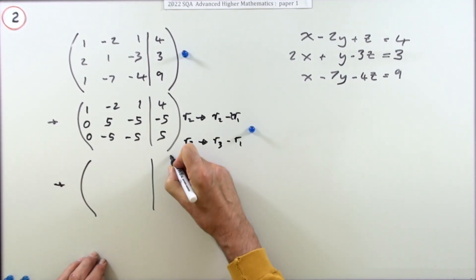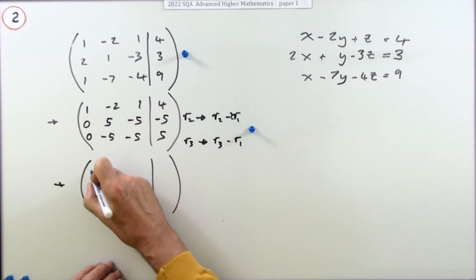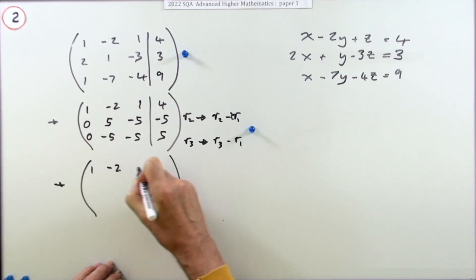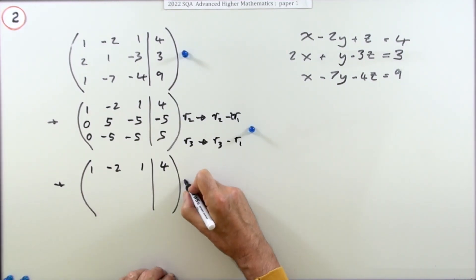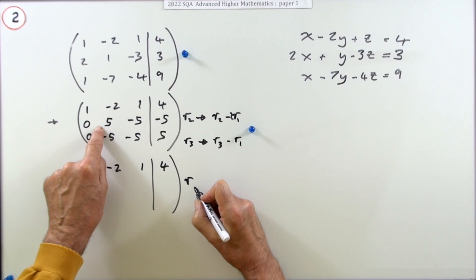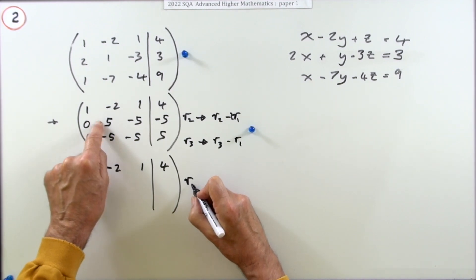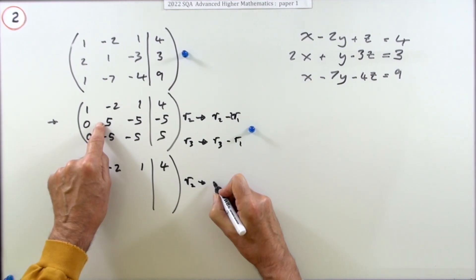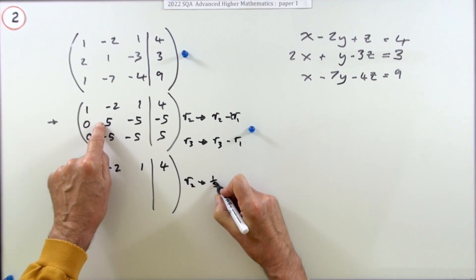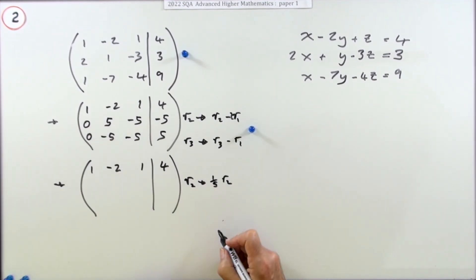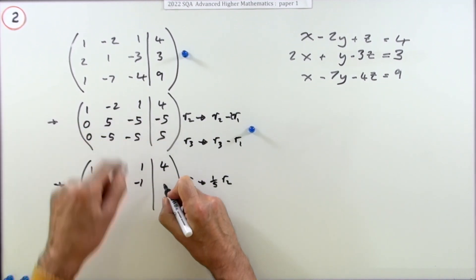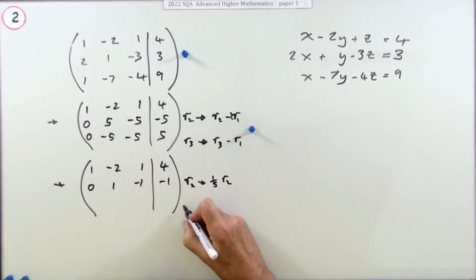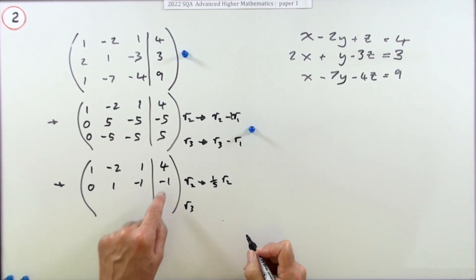I'm leaving row one alone, and at the same time I think I'll change this one - you don't need to - this row two can be simplified. So I'm going to take this row two and replace it with a fifth of itself just to get simpler numbers. So that means I'll have 0, 1, -1, -1.